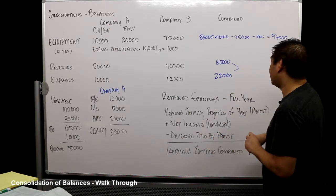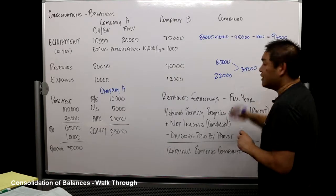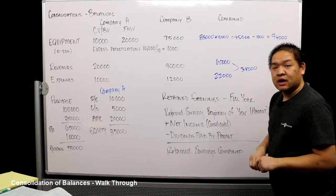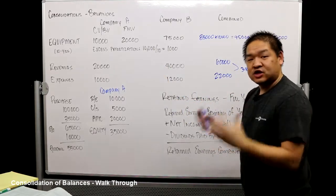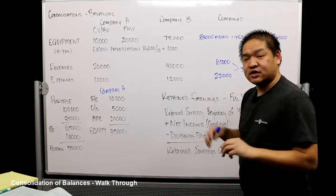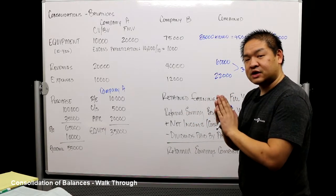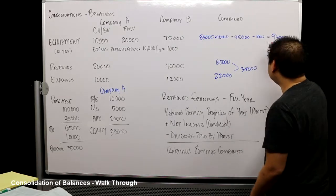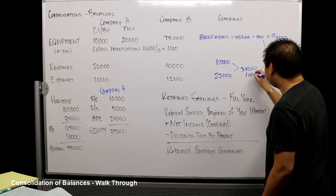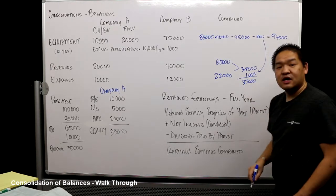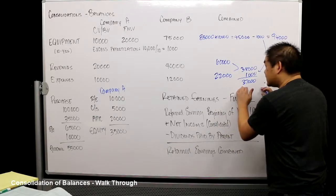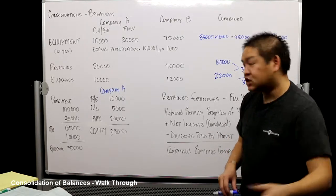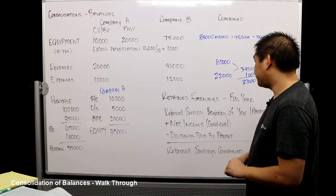That $38,000 would be fine except for one thing — the excess amortization. These numbers don't yet include that $1,000 consolidation worksheet adjustment. So we subtract $1,000, giving us consolidated net income of $37,000. The net income for this organization is $37,000 — not $38,000 — because we're taking an additional $1,000 deduction for excess amortization.